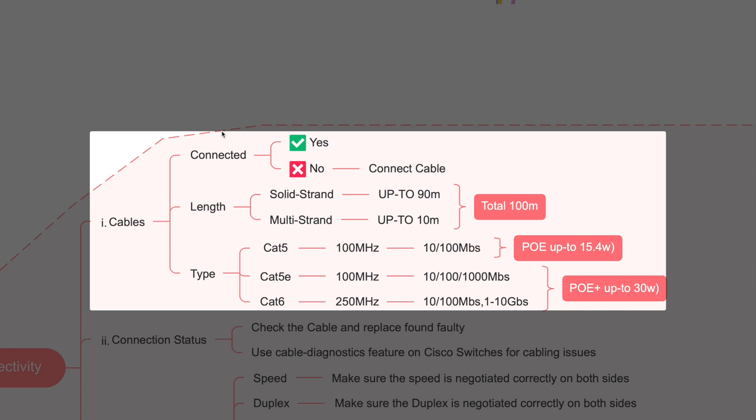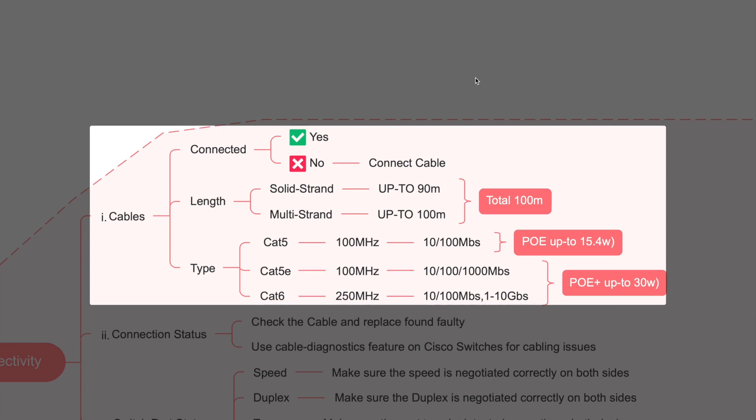Cabling is the major item to check for physical connectivity. First, make sure the cable is properly connected and fully inserted — most of the time cables appear connected but aren't making proper contact. In high-humidity areas you can use contact cleaner. When using RJ45 cables, ensure the copper contacts are connected correctly. Regarding cable length: the maximum is 100 meters, but with solid-strand cable it's 90 meters, so always keep runs under 90 meters to avoid issues.